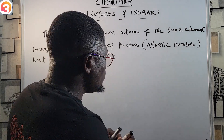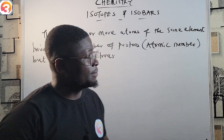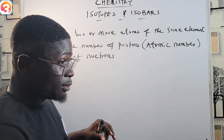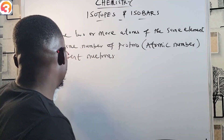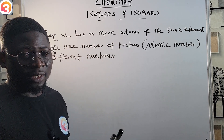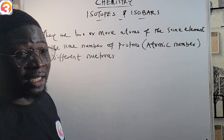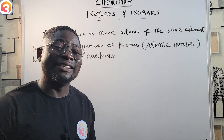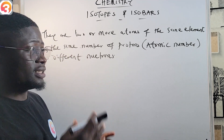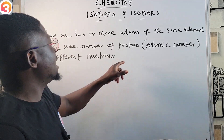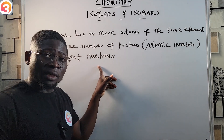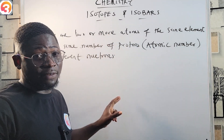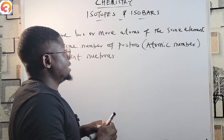Isotopes are two or more atoms of the same element having the same atomic number but different mass numbers. Their mass number is different because they have the same number of protons but a different number of neutrons, and for this to happen the mass number must be different.